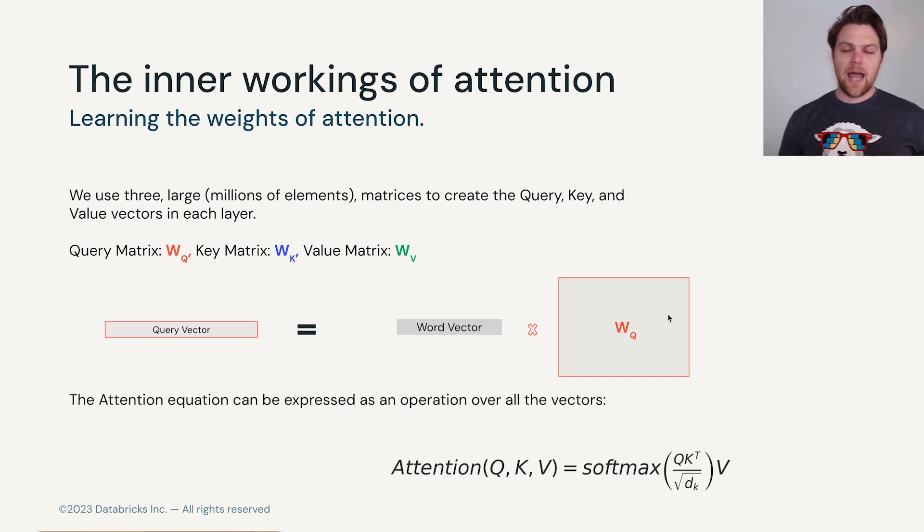To start with, let's think about how we can take the vector that we're working with, that's going to be the current token that we're looking at. Let's assume that we're in the first layer where we can directly correlate the input word embedding vector with the vector that we're going to talk about in attention here.